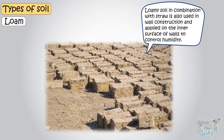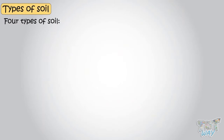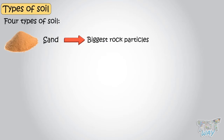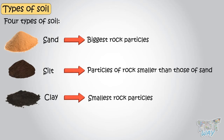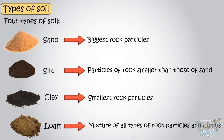Now let's revise what we have learned about types of soils. We learned about four types of soil: sand, which has the biggest rock particles; silt, which has particles of rock smaller than those of sand; clay, which has the smallest rock particles; and loam, which is the mixture of all types of rock particles and humus.